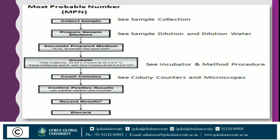In this method, there is a specific type of collection of sample — either food, milk, or water. Here we perform MPN using a milk sample. Then a dilution is prepared, then the sample is inoculated into a particular medium, then incubated to provide particular time for growth of the particular organism, and then the result is recorded and discarded.